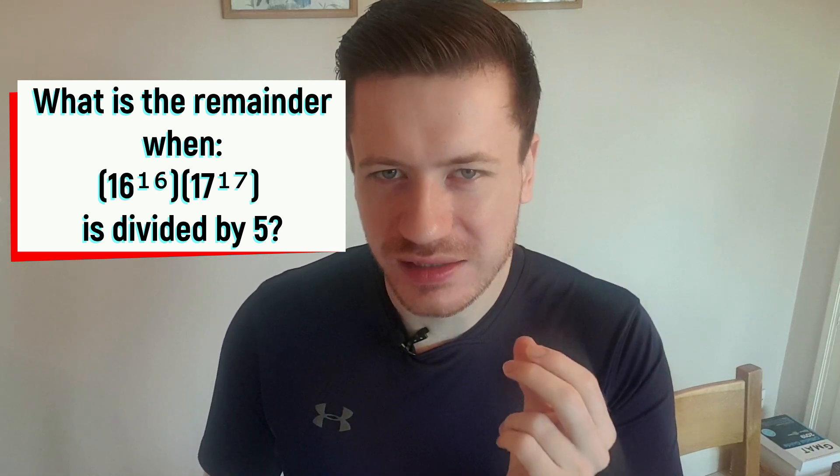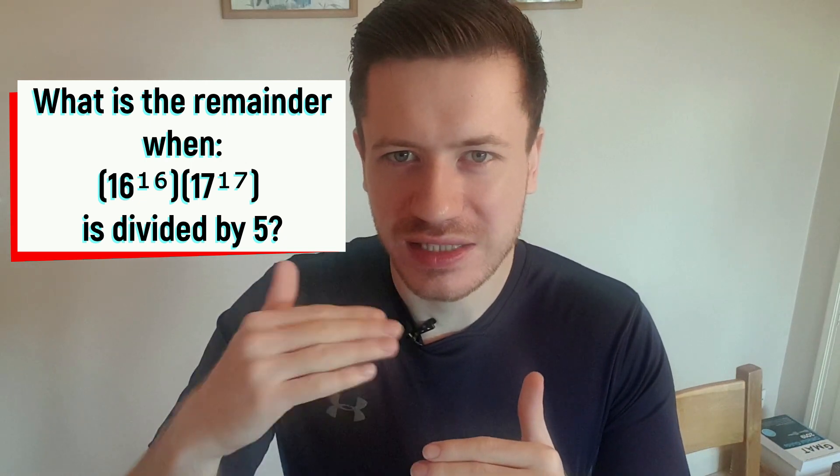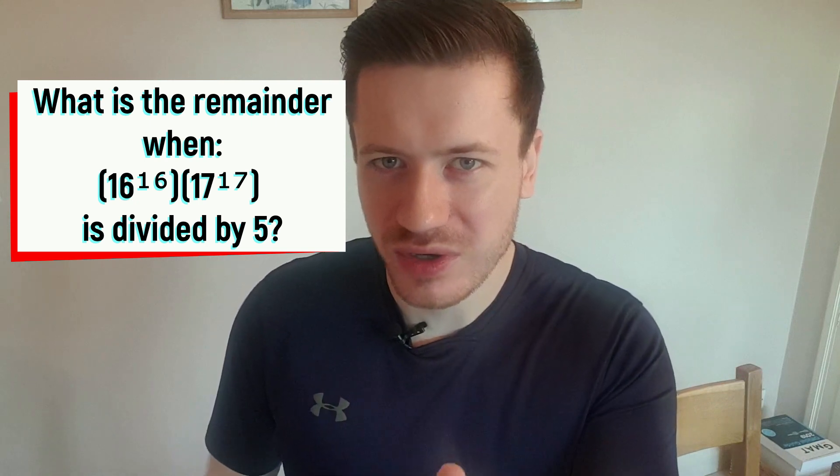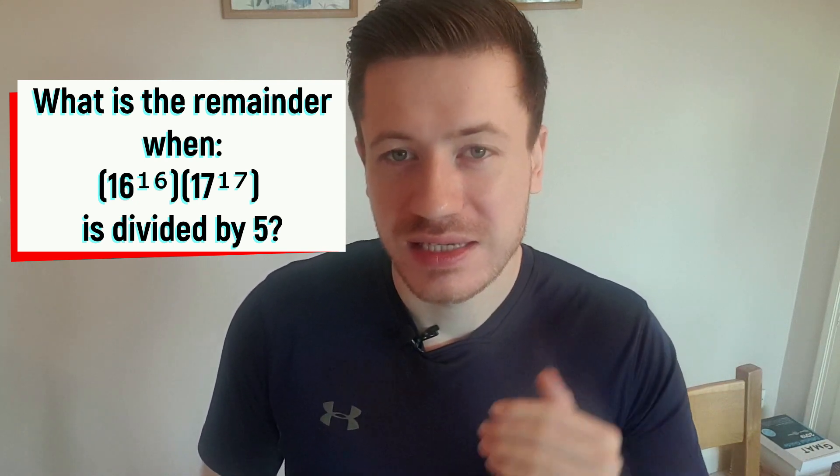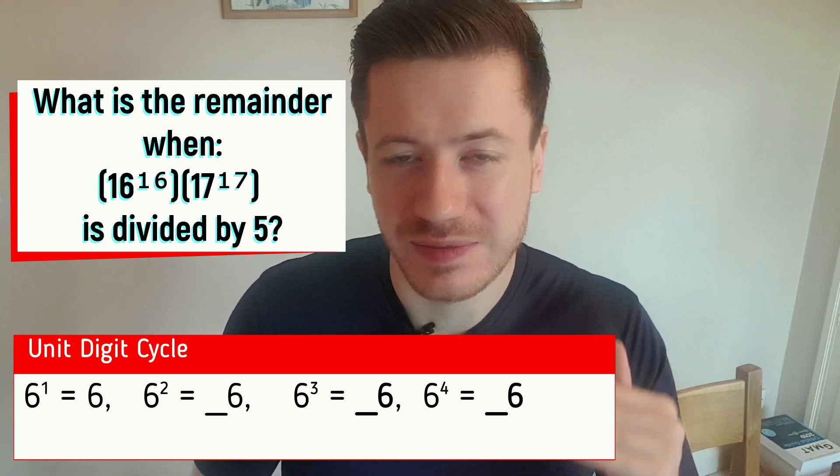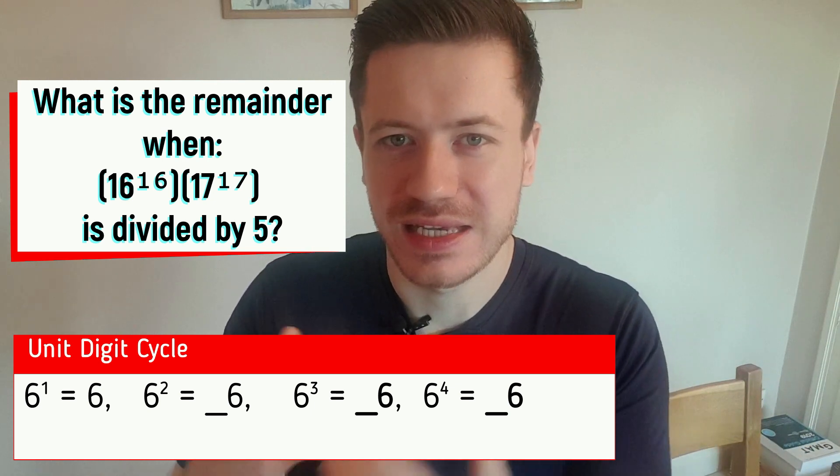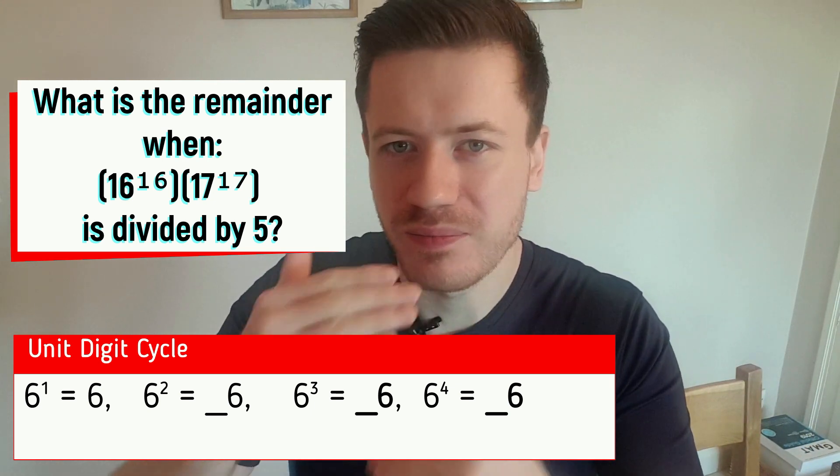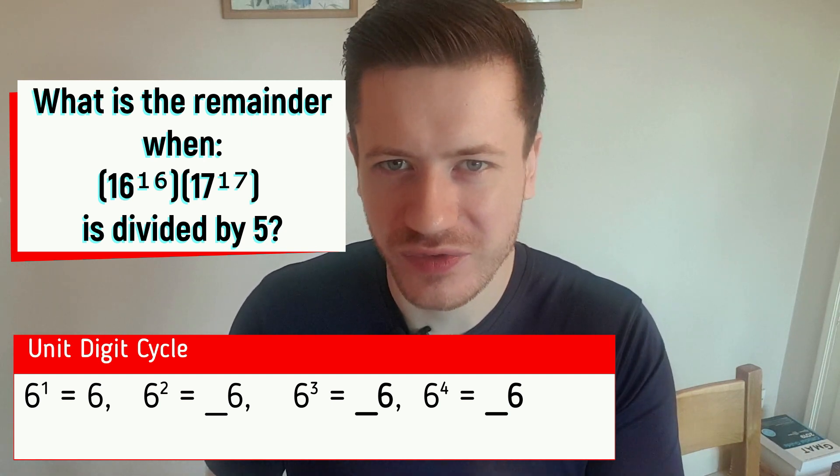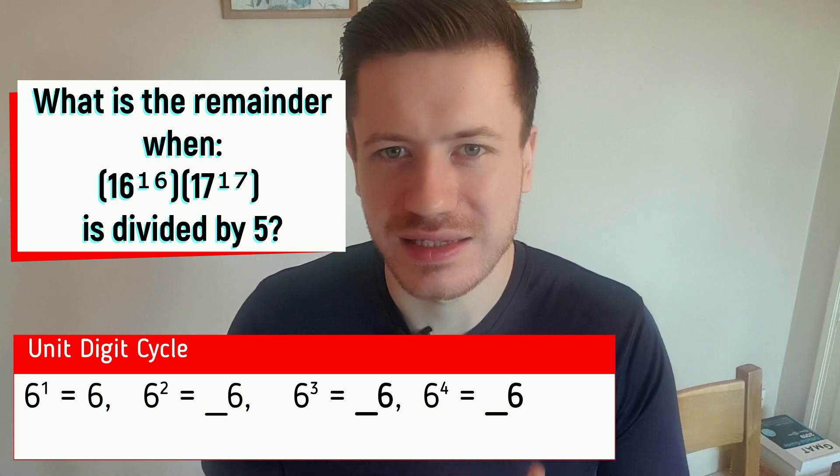The trick applies to the units digit only. So for 16, just focus on that six. Let's establish the unit digit cycle for the number six. Six to the power of one is six. Six to the power of two is also six, also ends in six. Six to the power of three is also going to end in six, because six times six is 36. So the powers of six always end in a six. So we can be 100% confident that 16 to the power of 16 ends in a six.